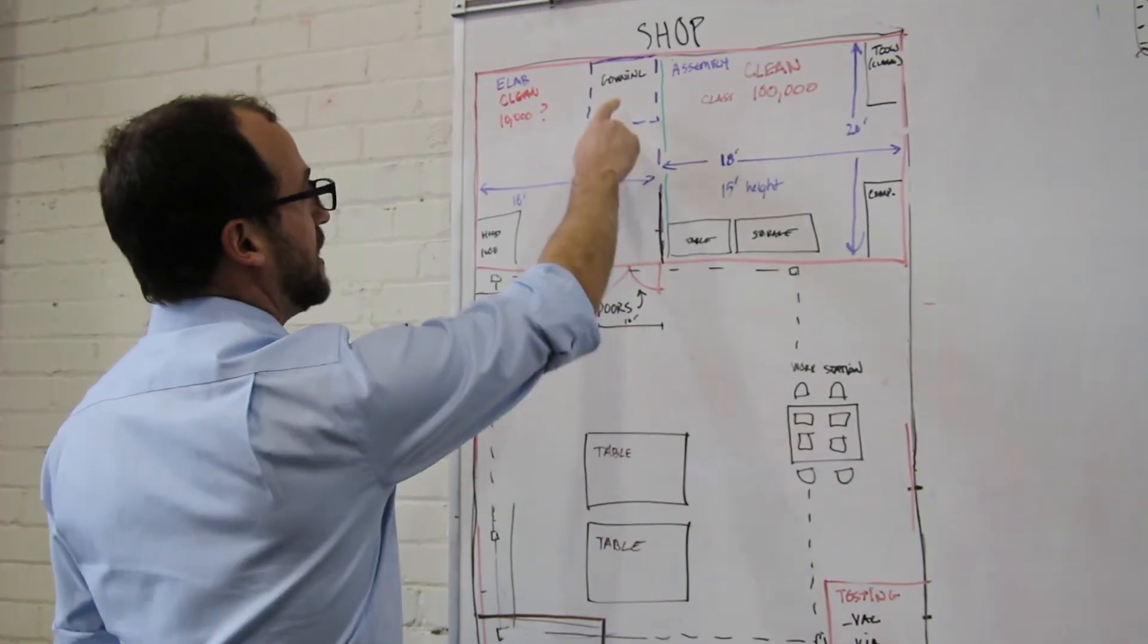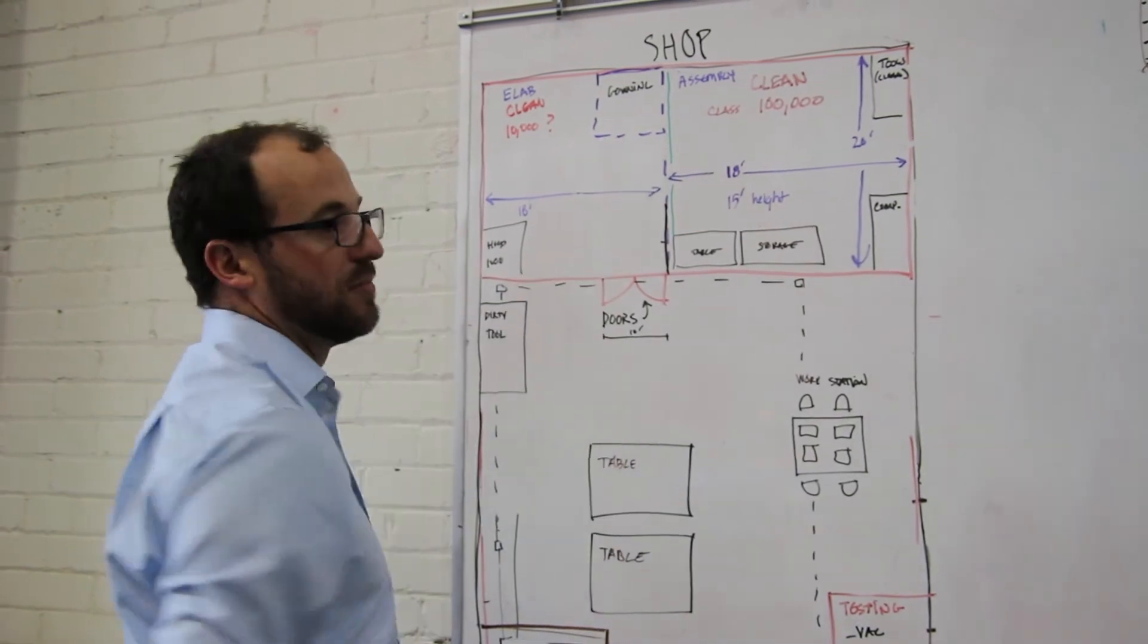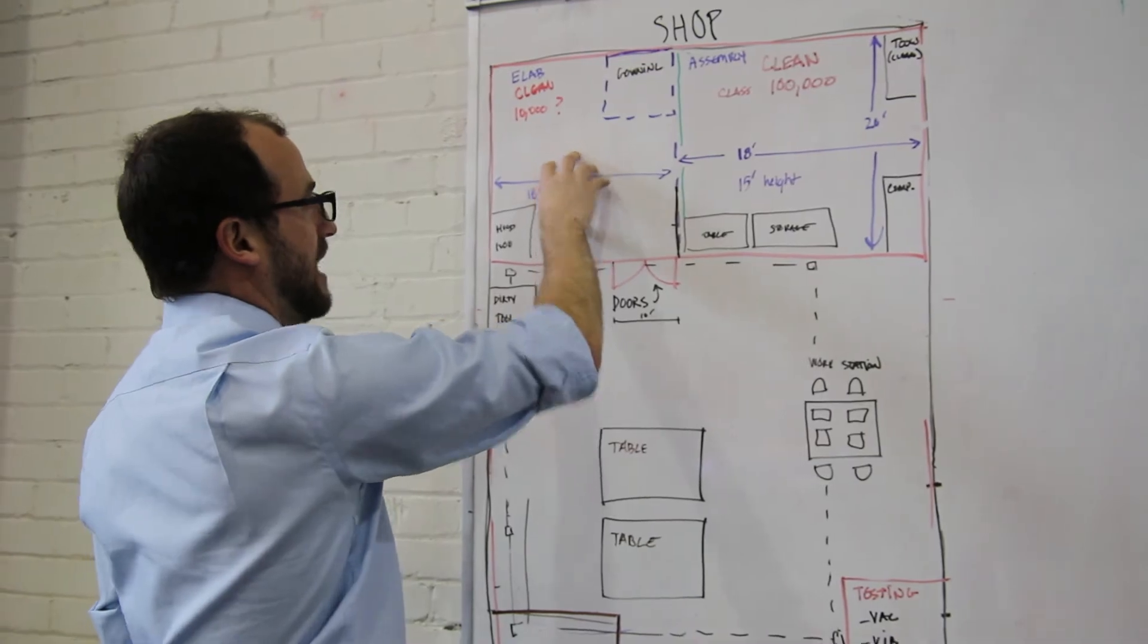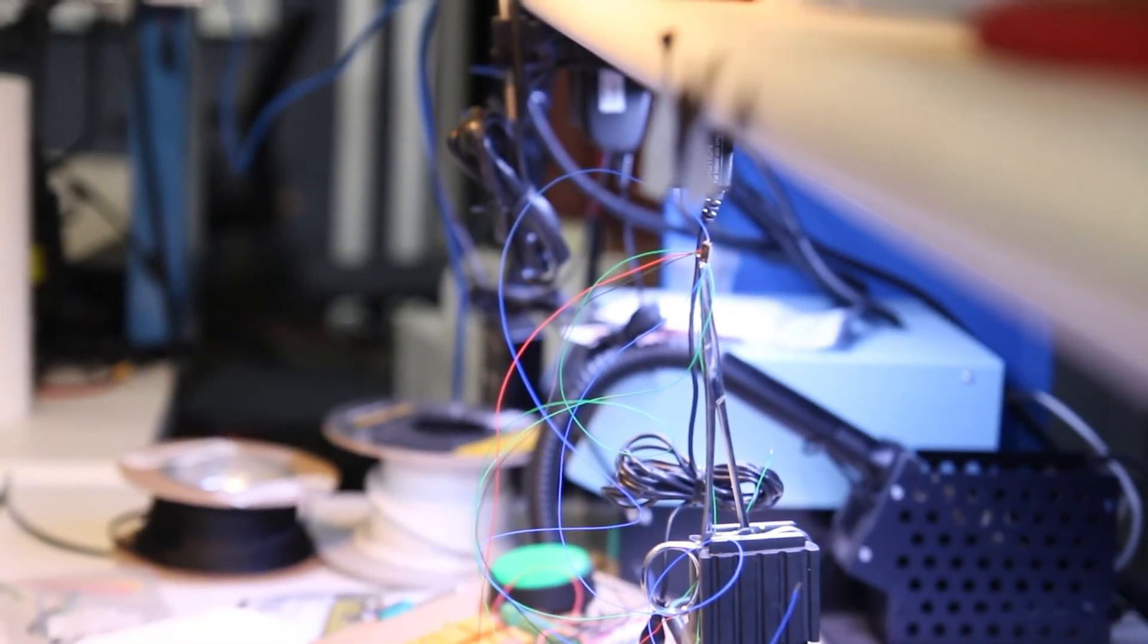We're going to have a gowning area where people can gown up to prepare to enter a clean room, an assembly area and an electronics lab where we could assemble and build our final space articles.